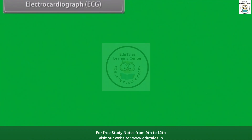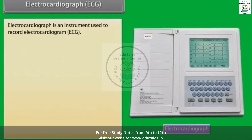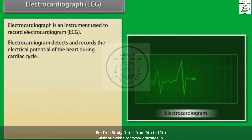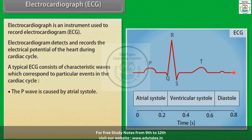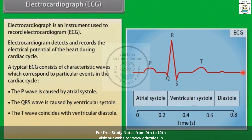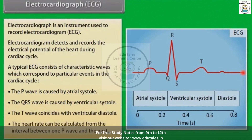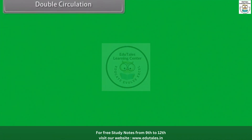An electrocardiograph is an instrument used to record an electrocardiogram (ECG). An electrocardiogram detects and records the electrical potential of the heart during the cardiac cycle. A typical ECG consists of characteristic waves corresponding to particular events in the cardiac cycle. The P wave is caused by atrial systole, the QRS wave is caused by ventricular systole, and the T wave coincides with ventricular diastole. The heart rate can be calculated from the interval between one P wave and the next.